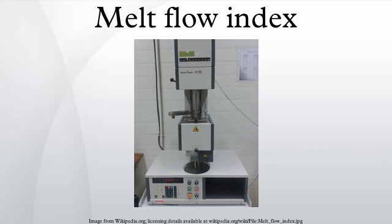Ratios between two melt flow rate values for one material at different gravimetric weights are often used as a measure for the broadness of the molecular weight distribution.